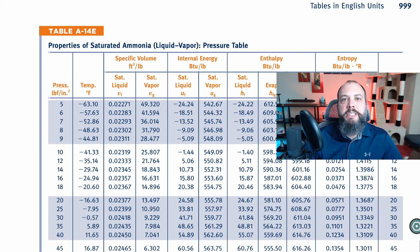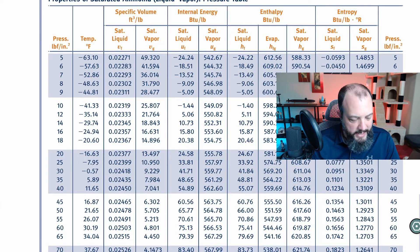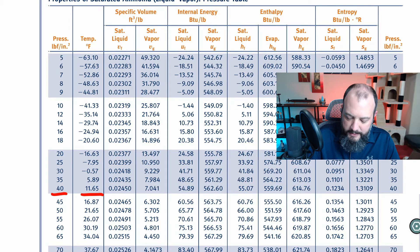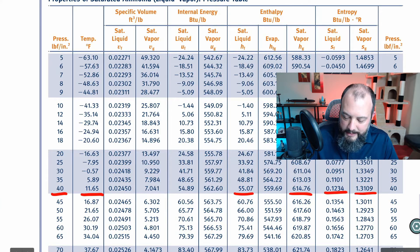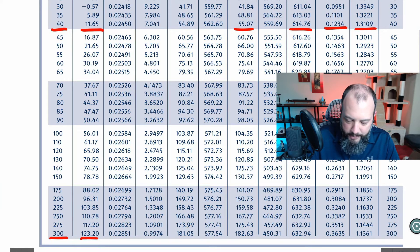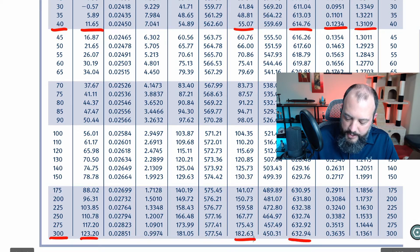In my textbook the ammonia steam tables for English units are table A-14E and I'll start off by grabbing information for the low pressure side 40 psi. We're going to need the temperature 11.65 degrees. We're going to need enthalpies 55.07 and 614.76. We'll also need entropies both the fluid and saturated gas and scrolling down to 300 psi we'll need the temperature of 123.2 and also the saturated fluid and gas enthalpies and entropies.